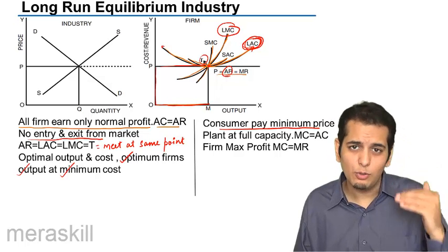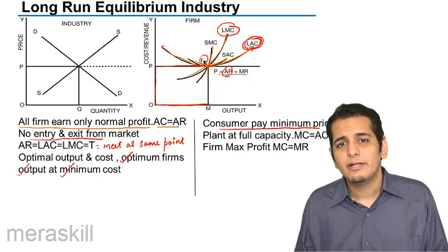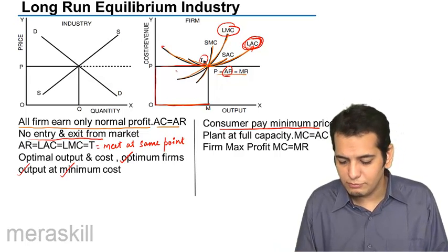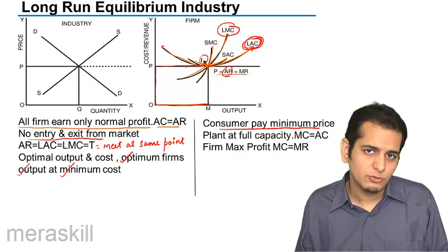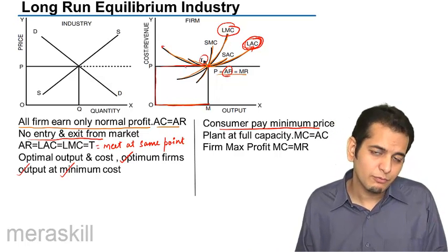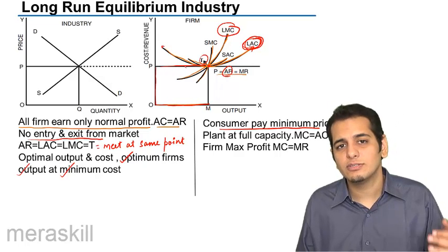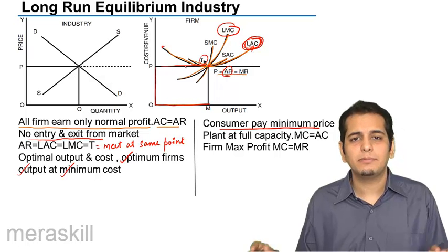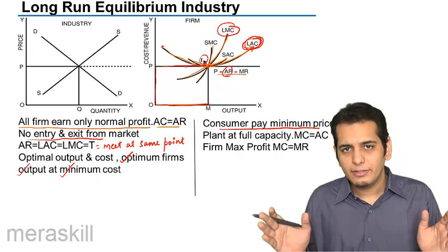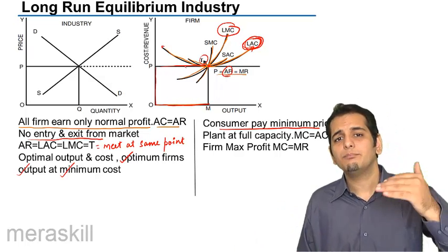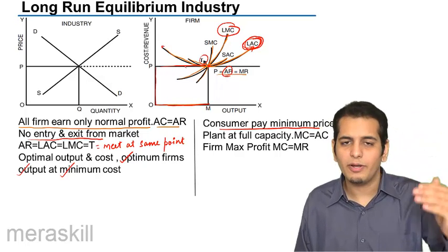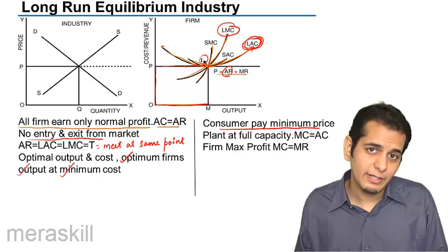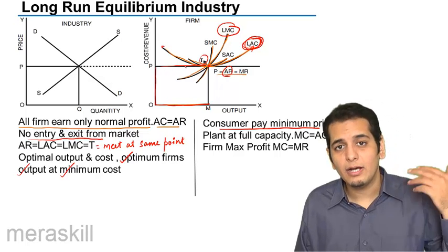If consumers want to pay a lower price, it will create a situation of losses for the firms because the firms are currently earning only normal profits. So if you lower the price, the firms would incur losses and will exit. As a result, the supply in the market will reduce, again pushing the price upwards back to equilibrium.